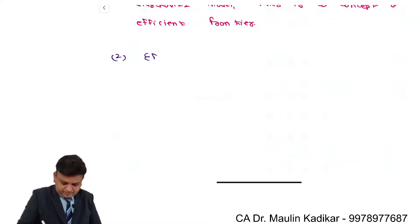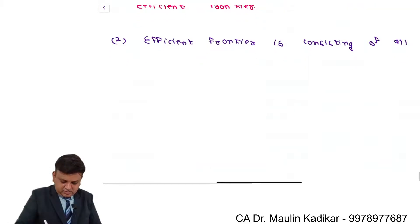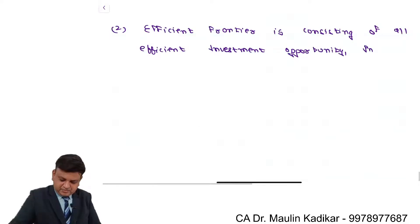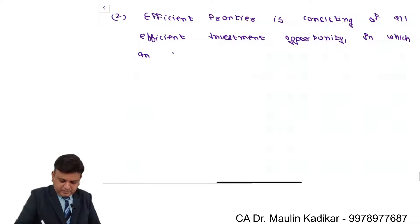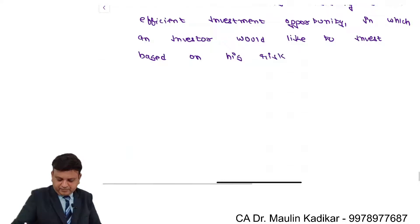Second point: the efficient frontier consists of all efficient investment opportunities in which an investor would like to invest, based on his risk-bearing capacity.